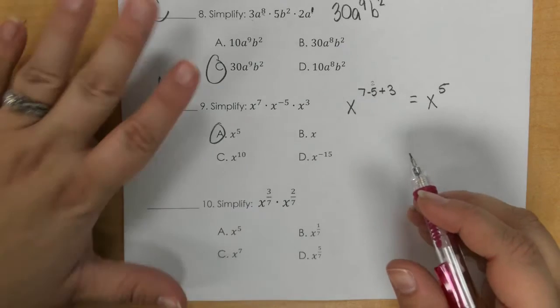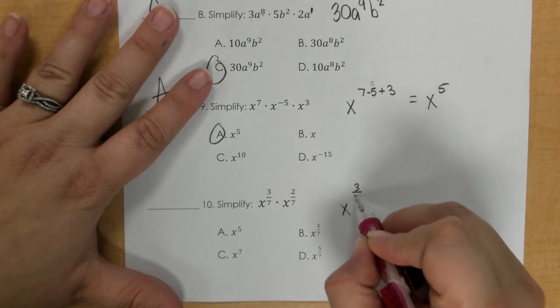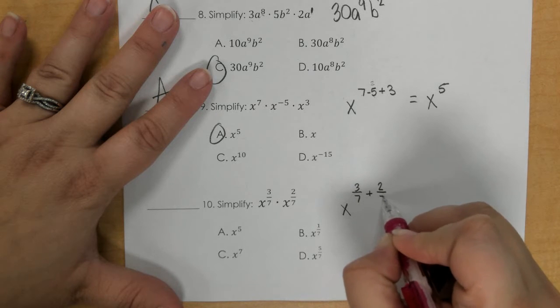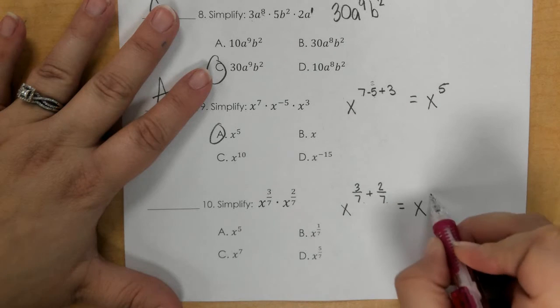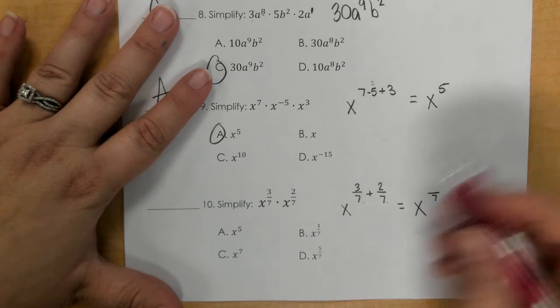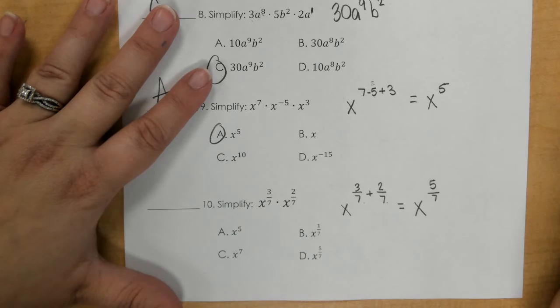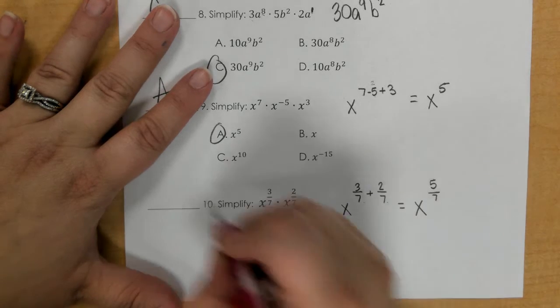In number 10, you are just adding the two fractions. When you add fractions, the denominator has to be the same, and you just keep it the same, 7. And then 3 plus 2 is 5. So 5/7, which is D.